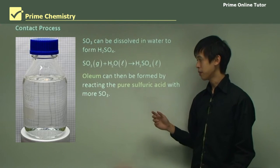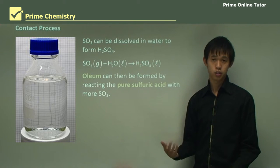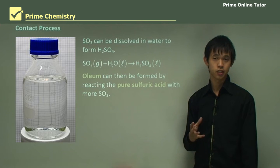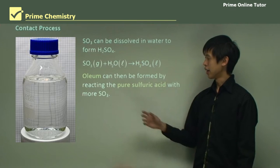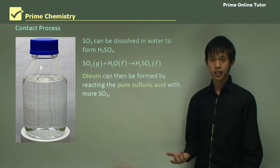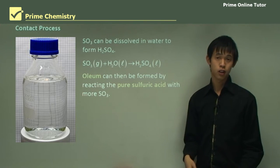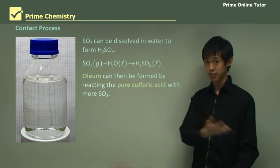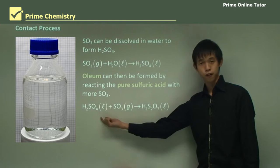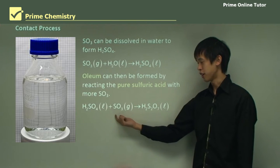From that we can actually form oleum, which is what we tend to want to produce more because oleum is easier to transport and handle. Oleum can be formed by reacting pure sulfuric acid with more sulfur trioxide: H2SO4 + SO3 → H2S2O7, which is oleum.